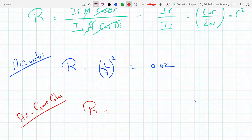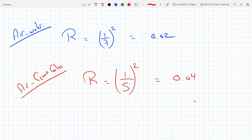And for air-crown glass, same thing - one over five squared, so that's one over 25, which is 0.04. So there's four percent, two percent. So we have more reflectance on the air-crown glass than the air-water interface.